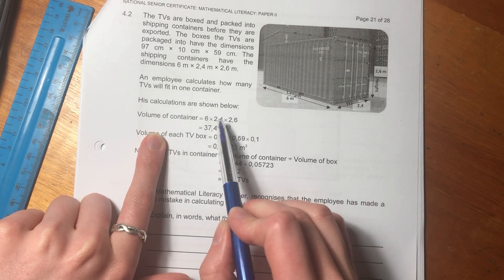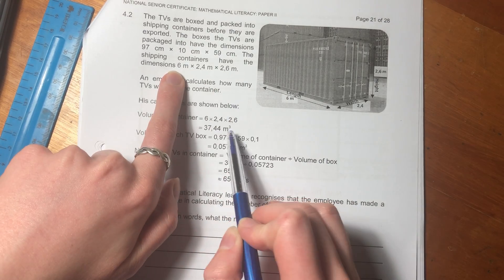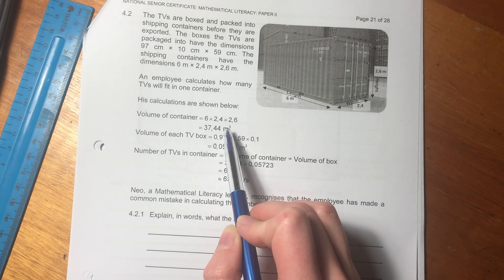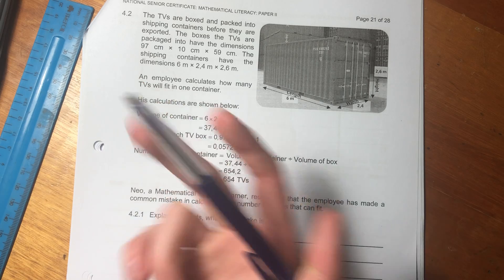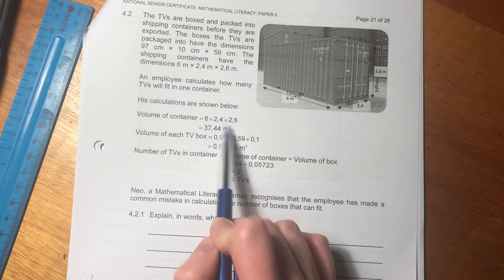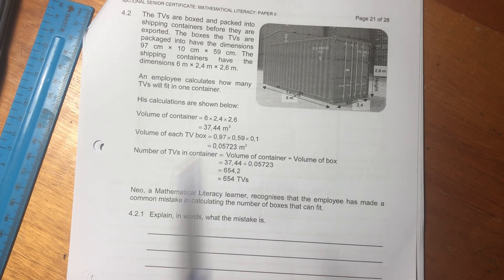So it says the volume of the container is 6 x 2.4 x 2.6, which is what we have over there. So that's meters cubed. Remember, we are timesing three different dimensions: length, breadth, and width. And that is why we have to the power of 3, or that little superscript 3.